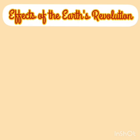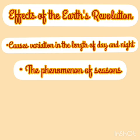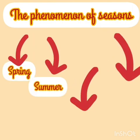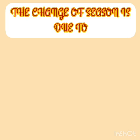The revolution of the earth around the sun causes variation in the length of day and night, which results in the distribution of heat over the surface of the earth, causing different seasons. The phenomenon of seasons is the most important effect of the earth's revolution. The 365 days of one year are divided into four main seasons: spring, summer, autumn, and winter.